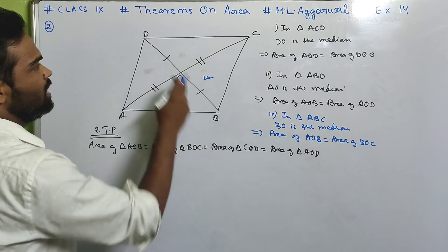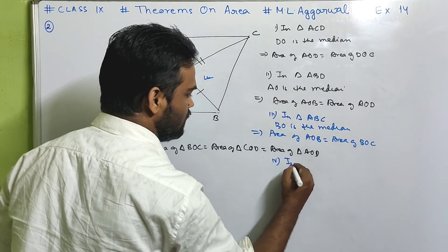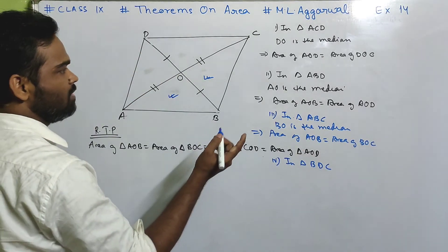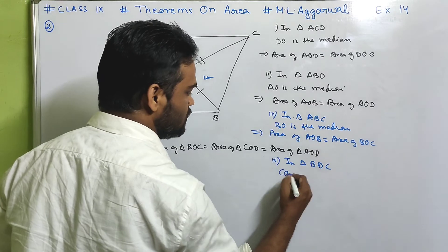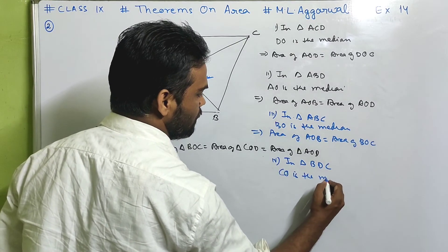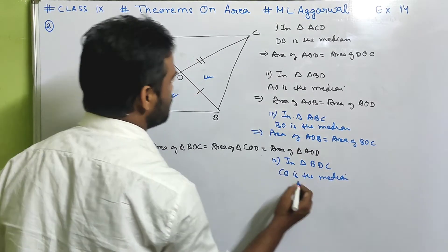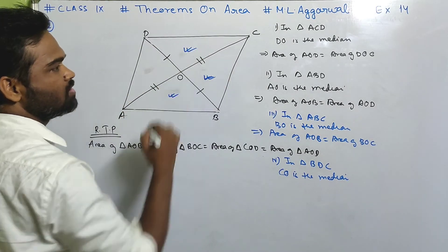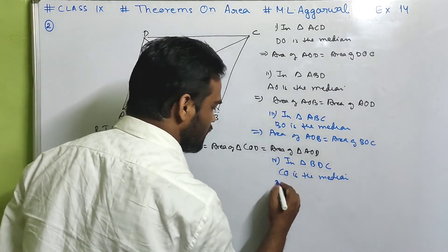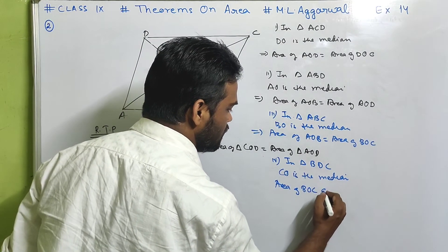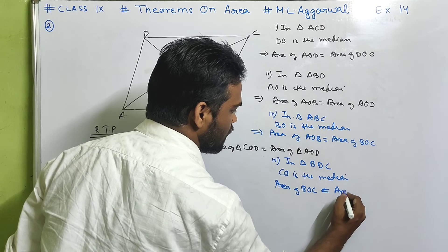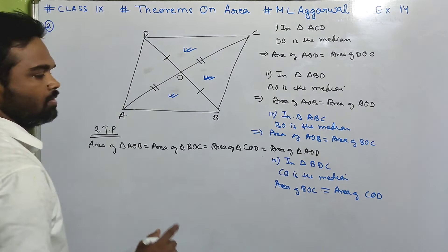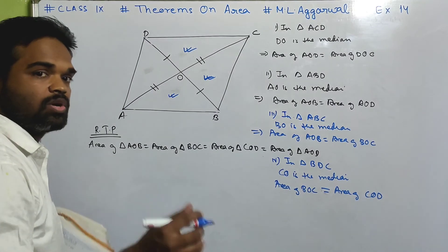One more triangle: BDC. In triangle BDC, BO equals OD, so CO is the median. Therefore area of triangle BOC equals area of triangle COD. The median divides the triangle into two equal triangles.